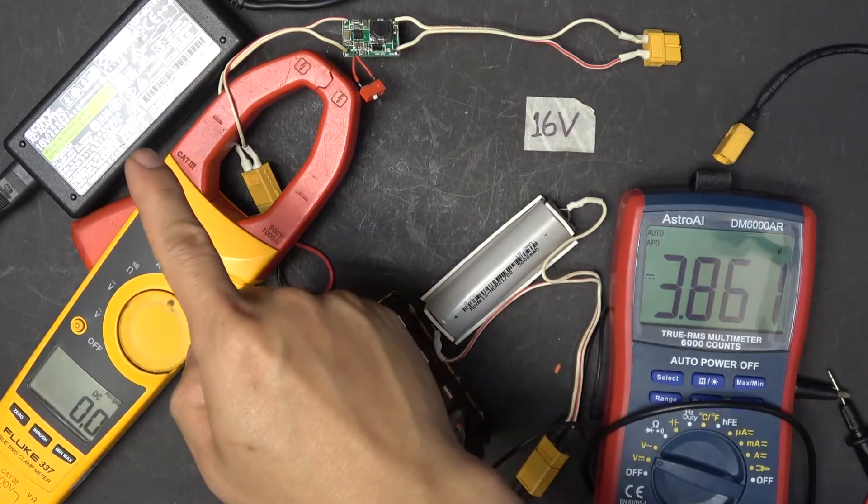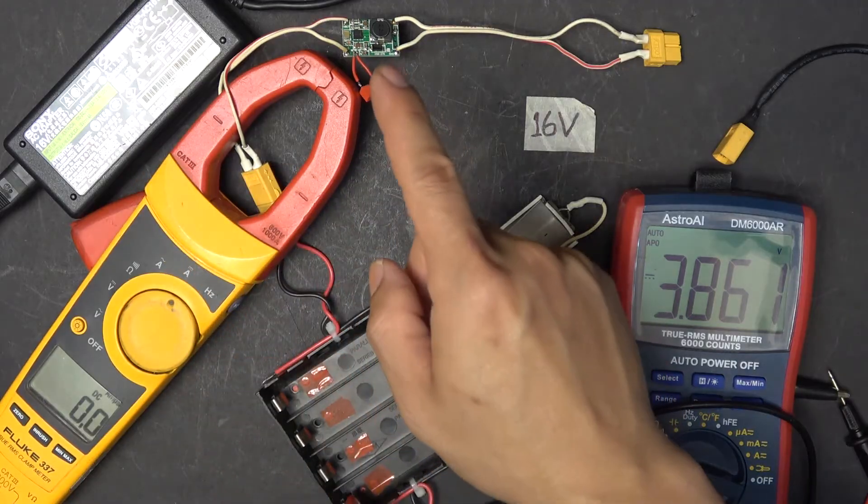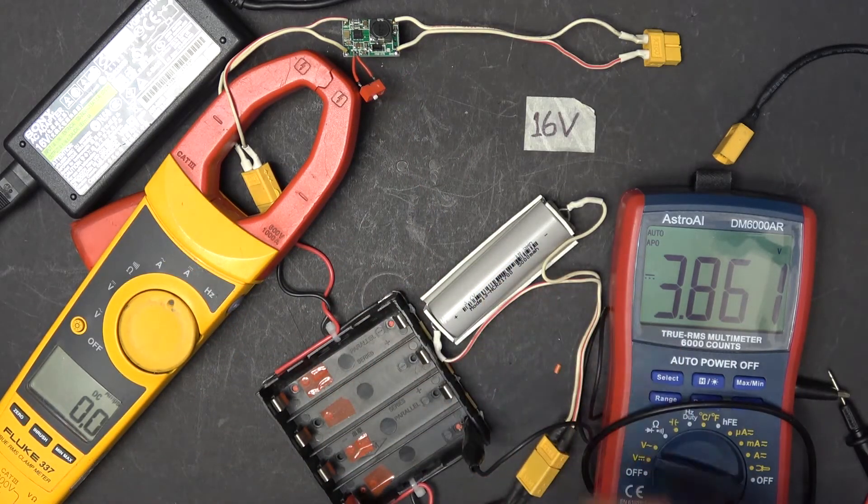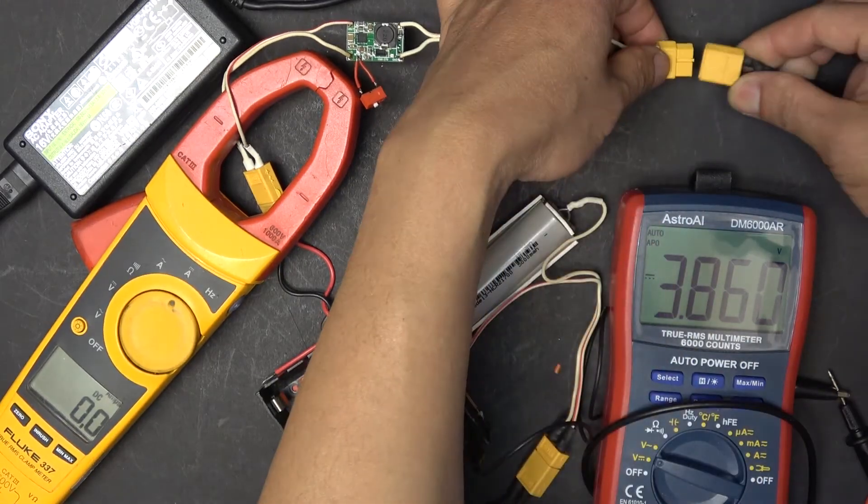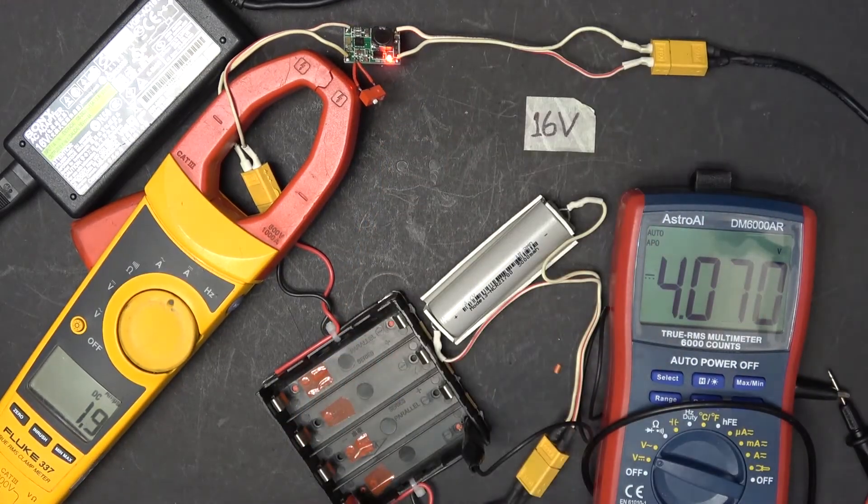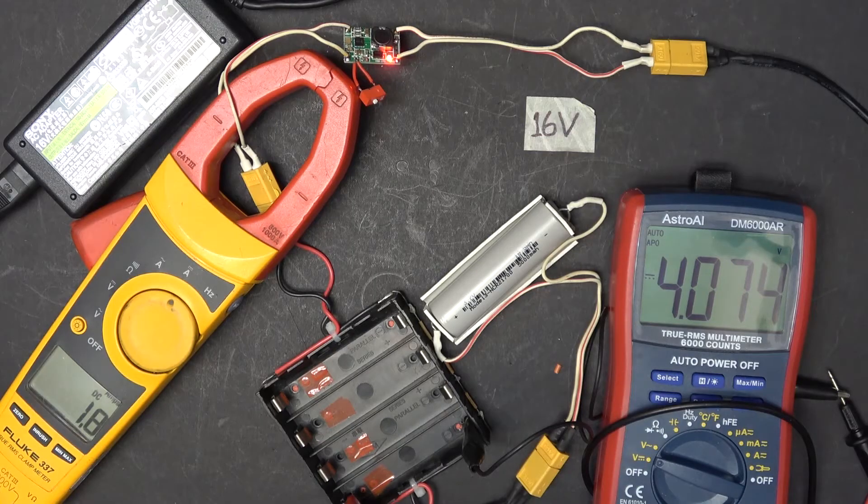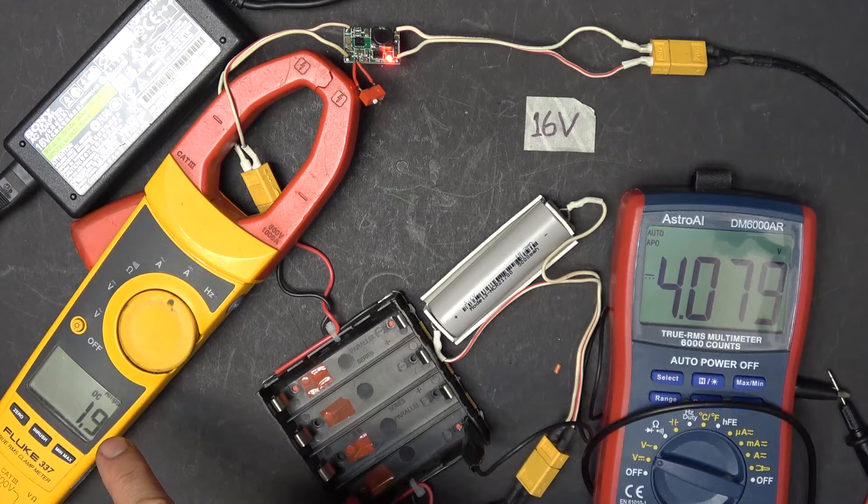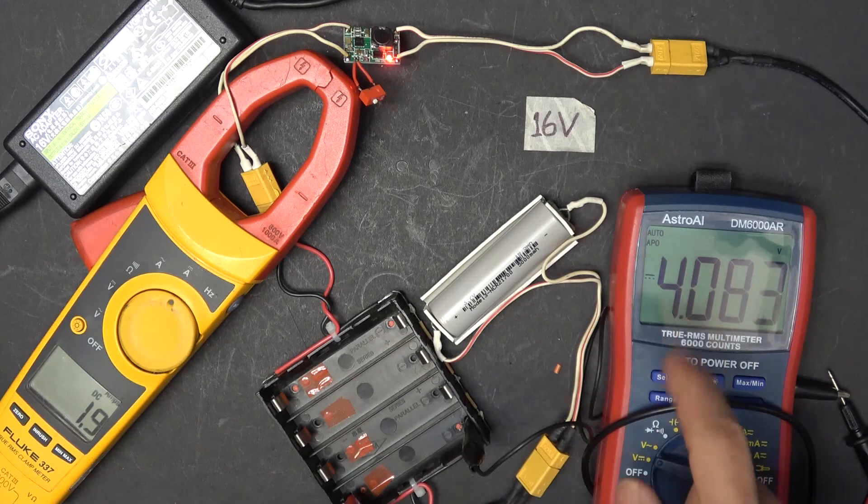I got my 16-volt power supply. Selector switch is off for charging 1S, and the battery is at 3.8 volts. Let's plug it in. It's working great, charging at 1.9 amps at 4 volts.